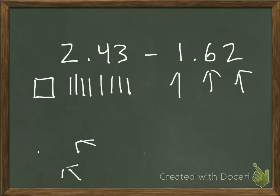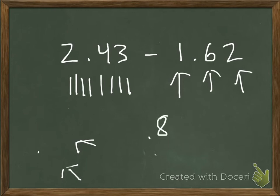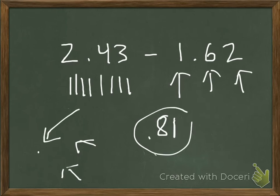You would then move on to the whole numbers place and subtract 1 whole from the wholes remaining, taking that away. What you should have gotten as your answer is 8 tenths and 1 hundredth — which gives you 81 hundredths. And that's how you use base 10 blocks to model decimal subtraction.